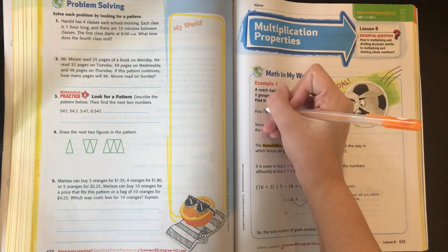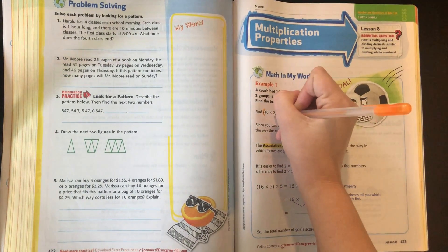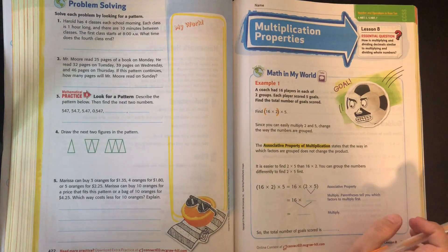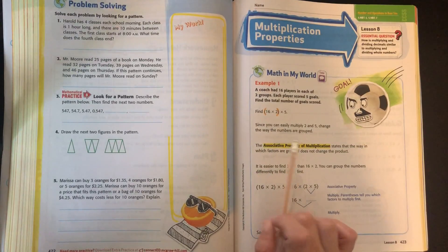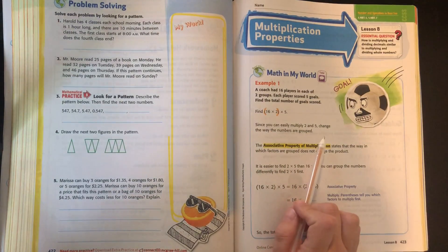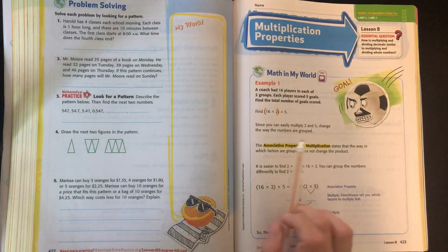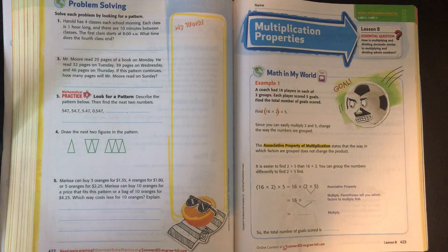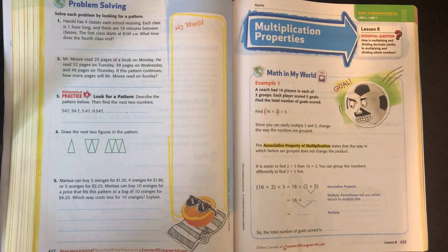All right, so it's asking us to find this number first times 5. Since we can kind of easily multiply 2 times 5, we can change the way that these numbers are grouped using the associative property of multiplication. It's almost exactly the same as the associative property of addition. It's just we're using multiplication this time.